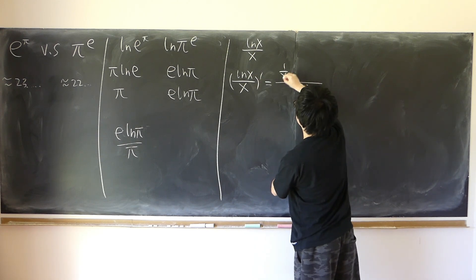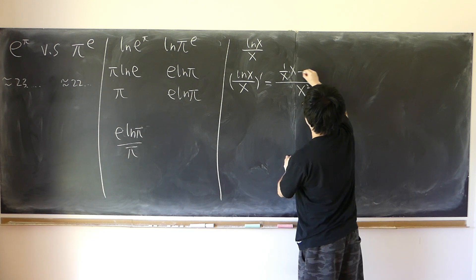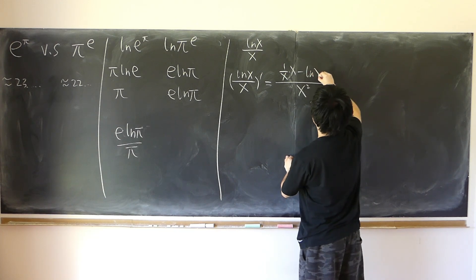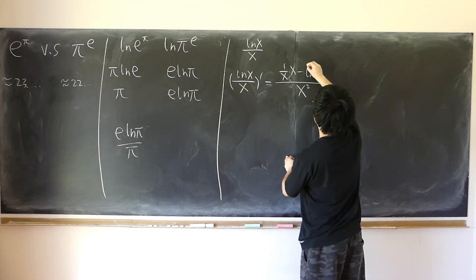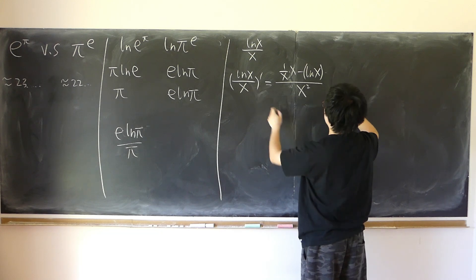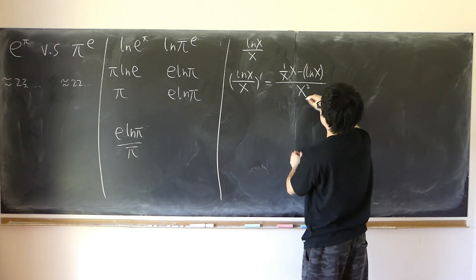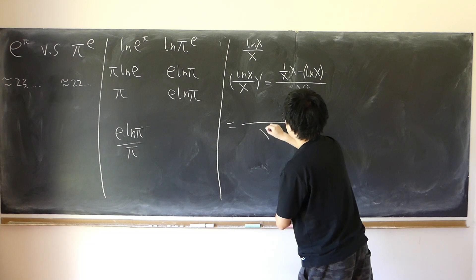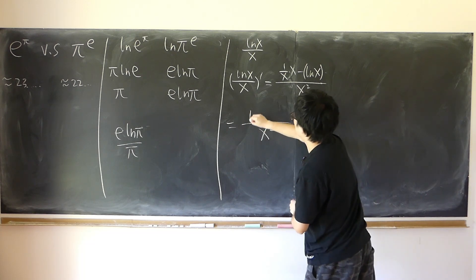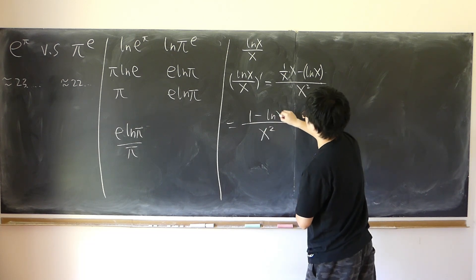So its derivative is equal to, derivative of log x is 1 over x times x minus log x. And derivative of x is just 1, and this is x squared, 1 minus log x over x squared. That's the derivative.